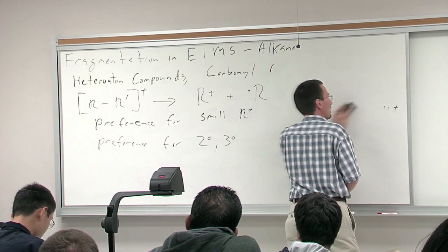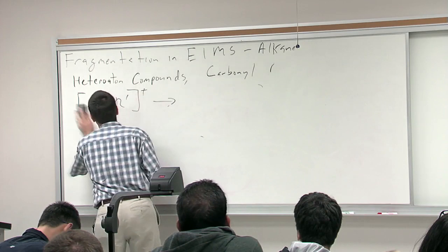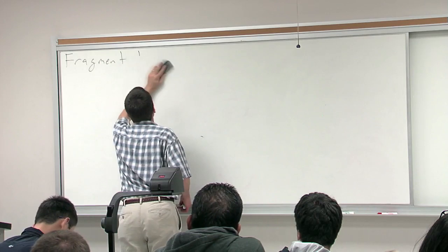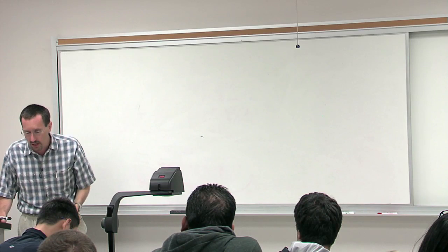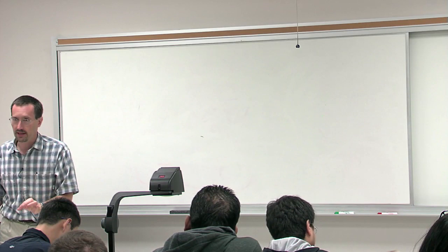Remember it's all reversed in the CI mass spec because you're putting on a proton which adds one. Then you'd say, okay, that can't be the molecular ion, and that's really important because otherwise you've gotten yourself stuck in this mindset saying, oh this is the molecular ion, how do I get this structure?